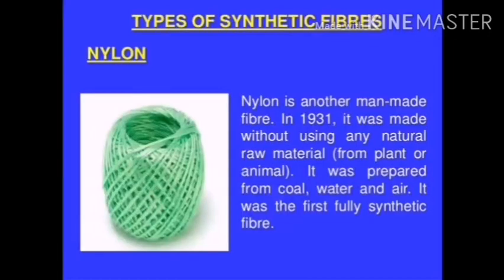Another synthetic fibre is nylon. Nylon is the first synthetic fibre made by humans. It is a polymer prepared by joining a large number of amide molecules — so the monomer is amide molecules. In 1931, it was made without using any natural raw material from plants or animals. It was prepared from coal, water and air, making it the first fully synthetic fibre.